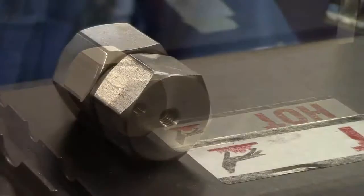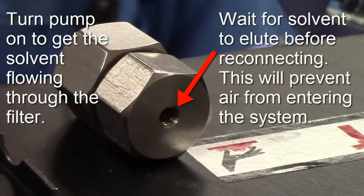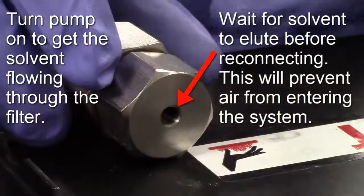Then, turn on the flow rate and wait for solvent to elute from the filter before connecting the outlet line. This will minimize the amount of air introduced into your system.